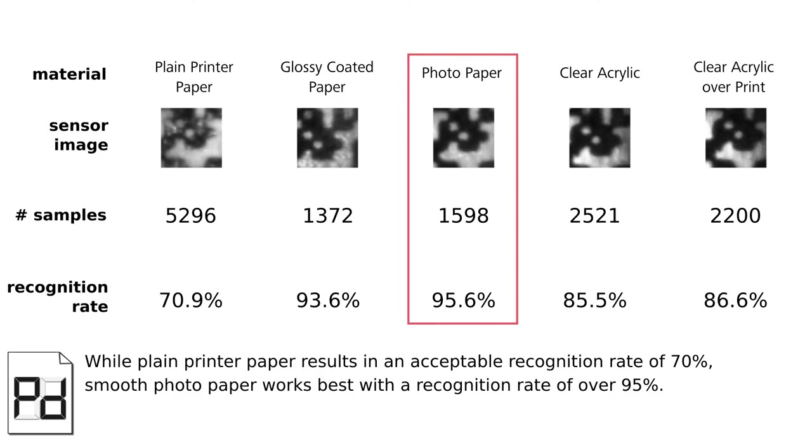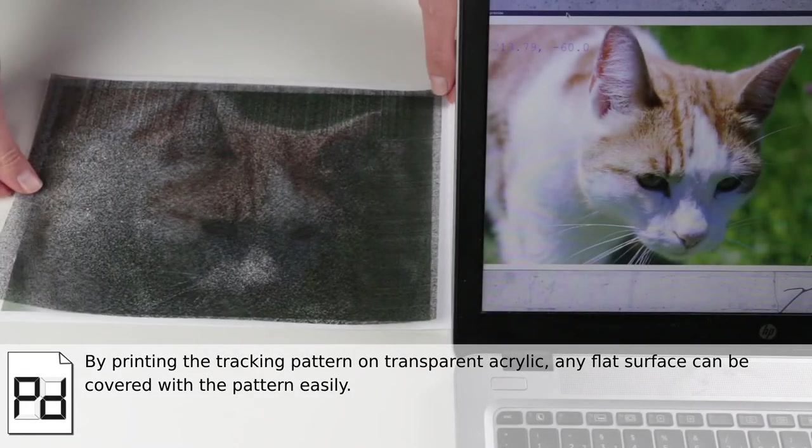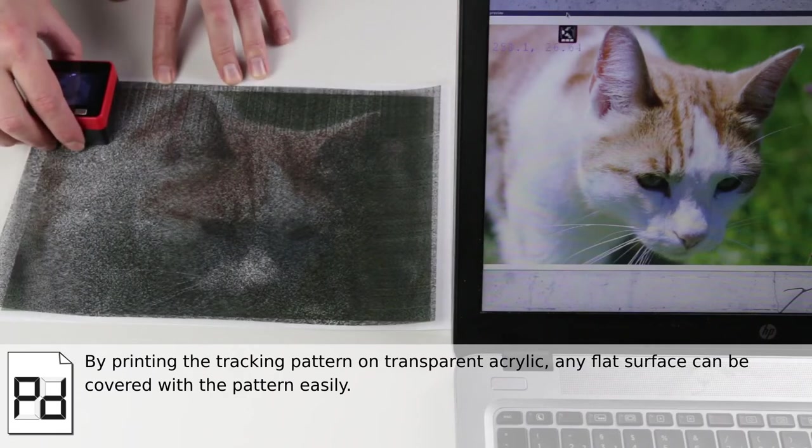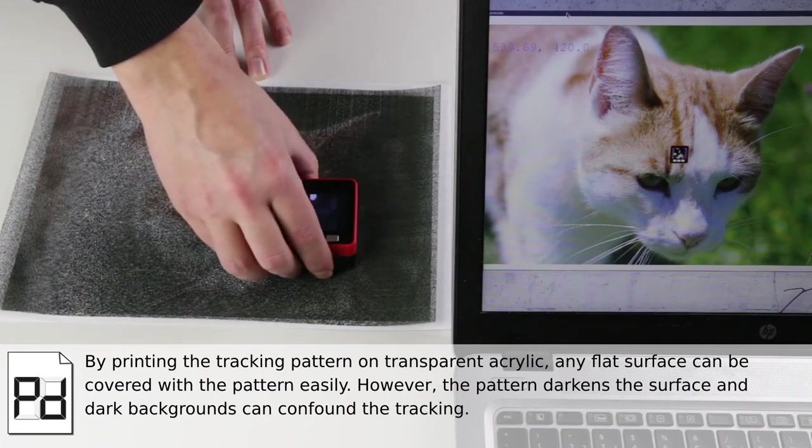By printing the tracking pattern on transparent acrylic, any flat surface can be covered with the pattern easily. However, the pattern darkens the surface and dark backgrounds can confound the tracking.